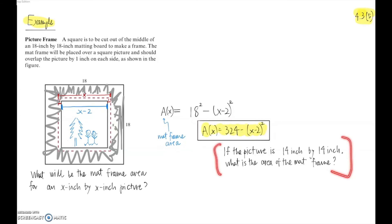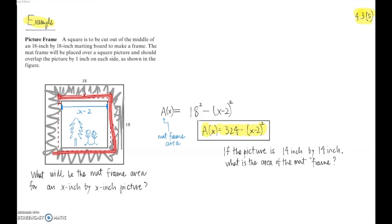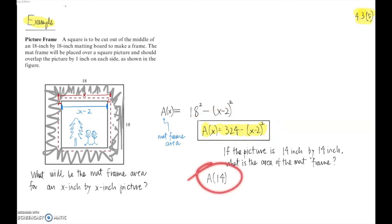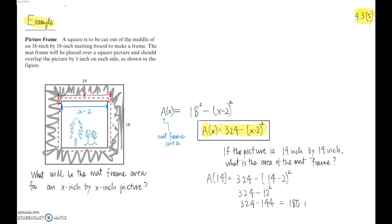As a follow-up: if the picture is 14 inches by 14 inches, what's the area of the mat frame? Since x = 14, we compute A(14) = 324 − (14 − 2)² = 324 − 12² = 324 − 144 = 180 square inches. So if the picture is 14 by 14, the mat frame area is 180 square inches.